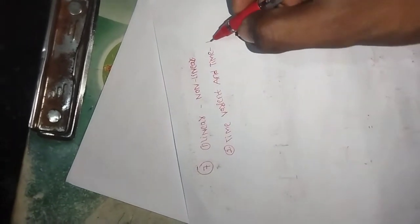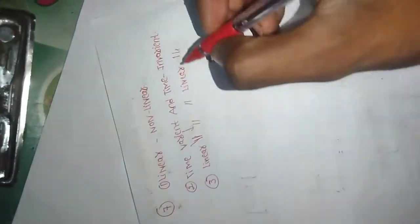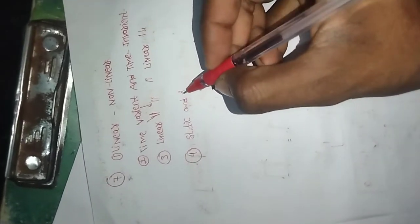The properties of systems are: first, linear and nonlinear; second, time variant and time invariant; third, linear time variant and linear time invariant; fourth, static and dynamic systems.